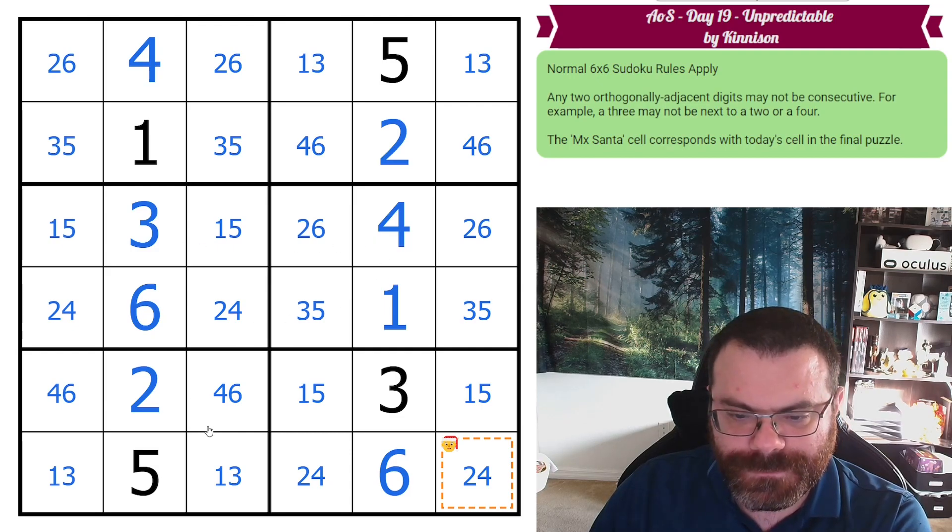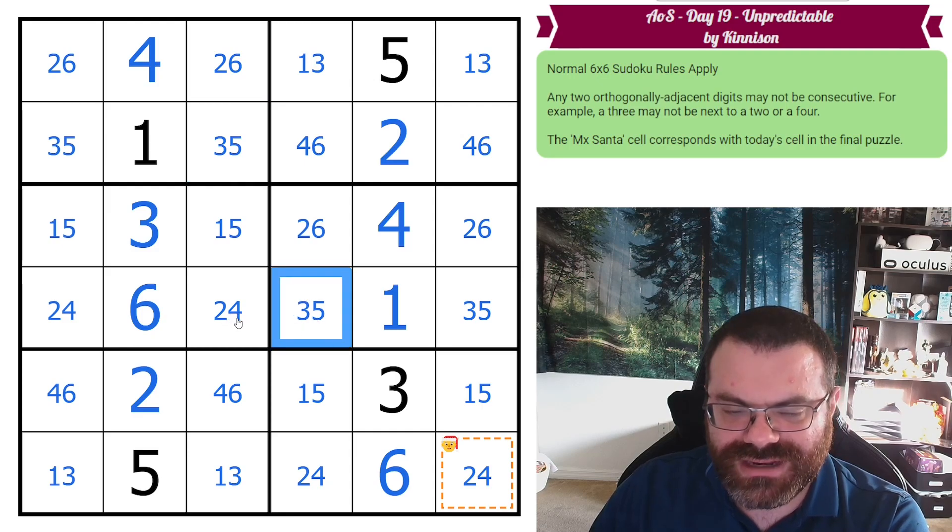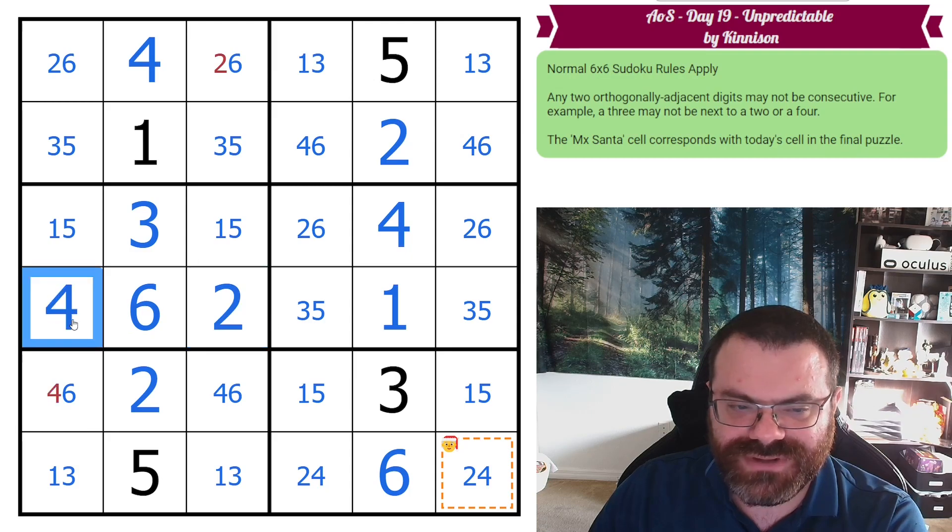Let's see. I must be missing a non-consecutive somewhere that I didn't notice. Yes, this 3-5 here, it's the same as up here. 4 cannot be next to 3 or 5, so this is the 2, and then that should resolve everything else.